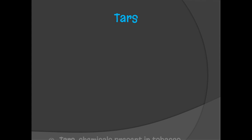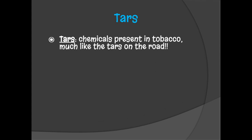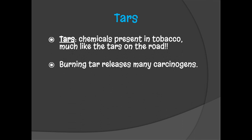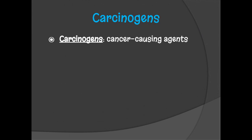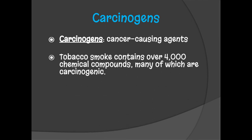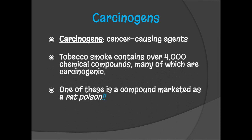Up next is tars. There are actually tars present in tobacco products, especially in cigarettes, and this is very similar to the tar you would find on the pavement on the road. When you burn tar — as you would with vaping or smoking — it releases many carcinogens, which are cancer-causing agents. This does not mean that smoking one cigarette guarantees cancer, but there is a lot of data proving that carcinogens in tobacco products significantly increase your likelihood of developing certain cancers. Tobacco smoke contains over 4,000 chemical compounds, many of which are cancer-causing, and one of those is a compound marketed as rat poison.